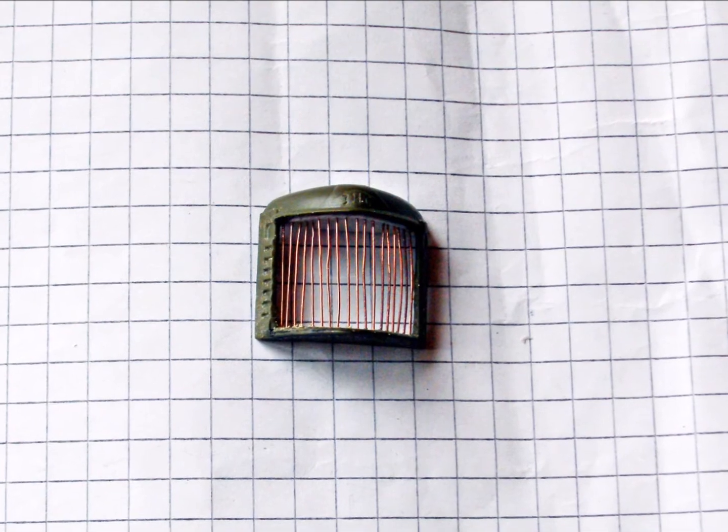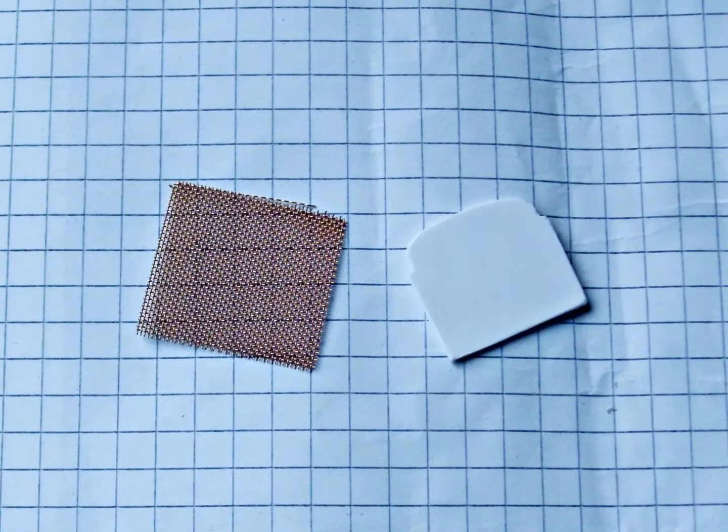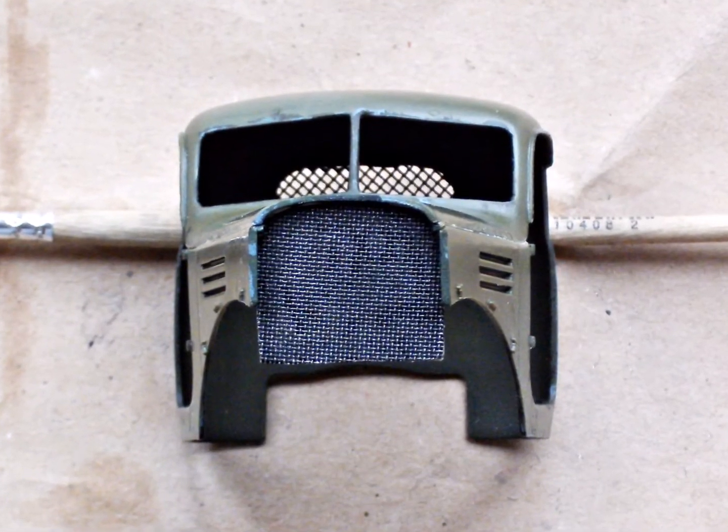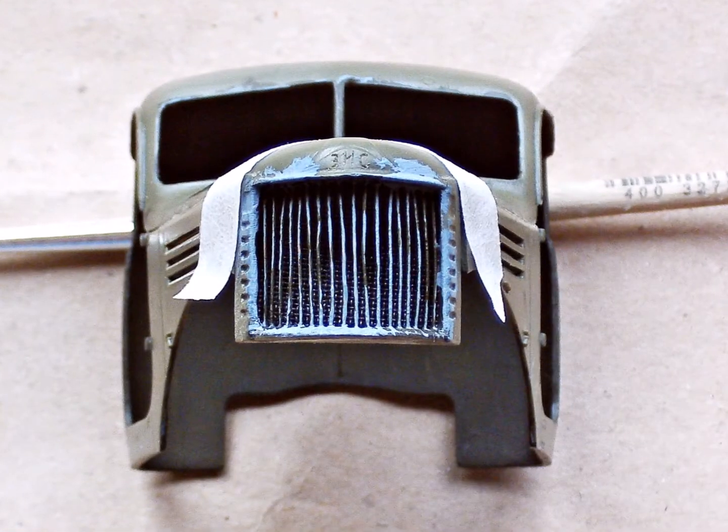I rebuilt the grill with 0.3mm copper wire. After that, a radiator was needed. I made one from 1mm plastic card and fine mesh wire from PLUS model. That's what it looks like.